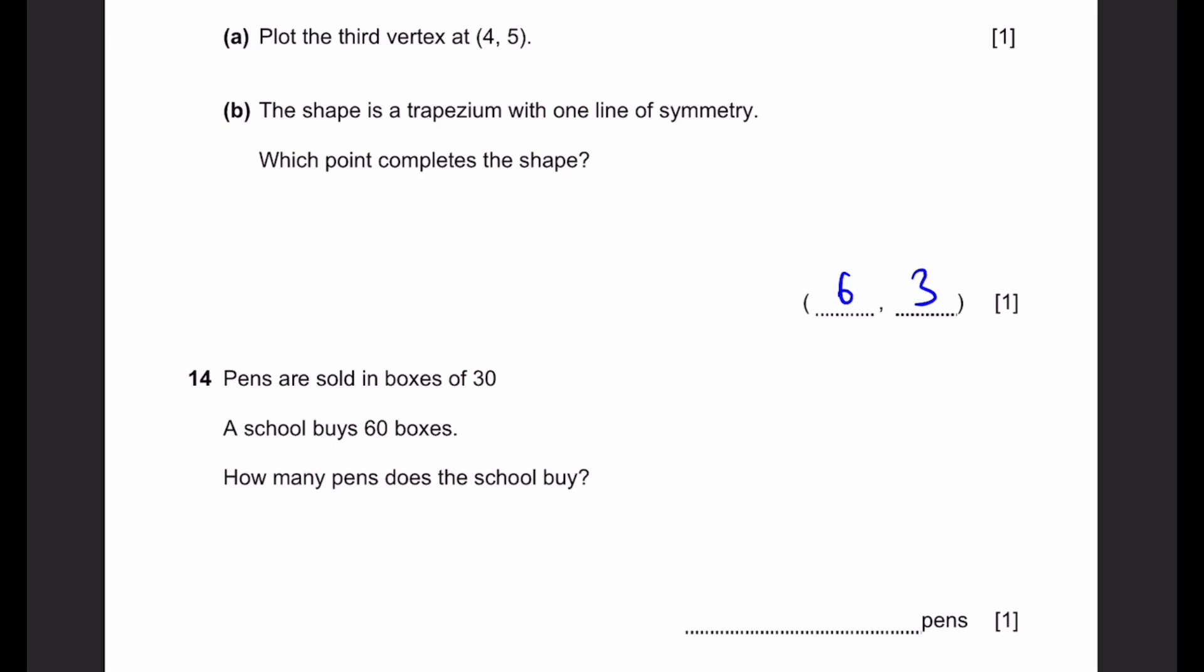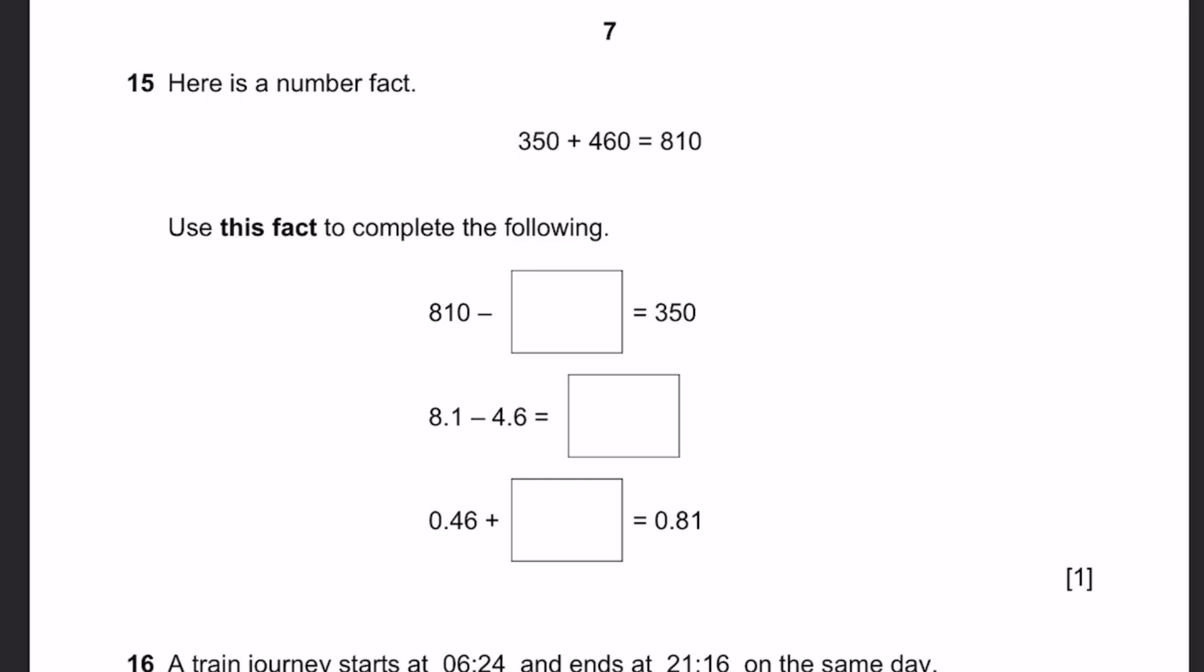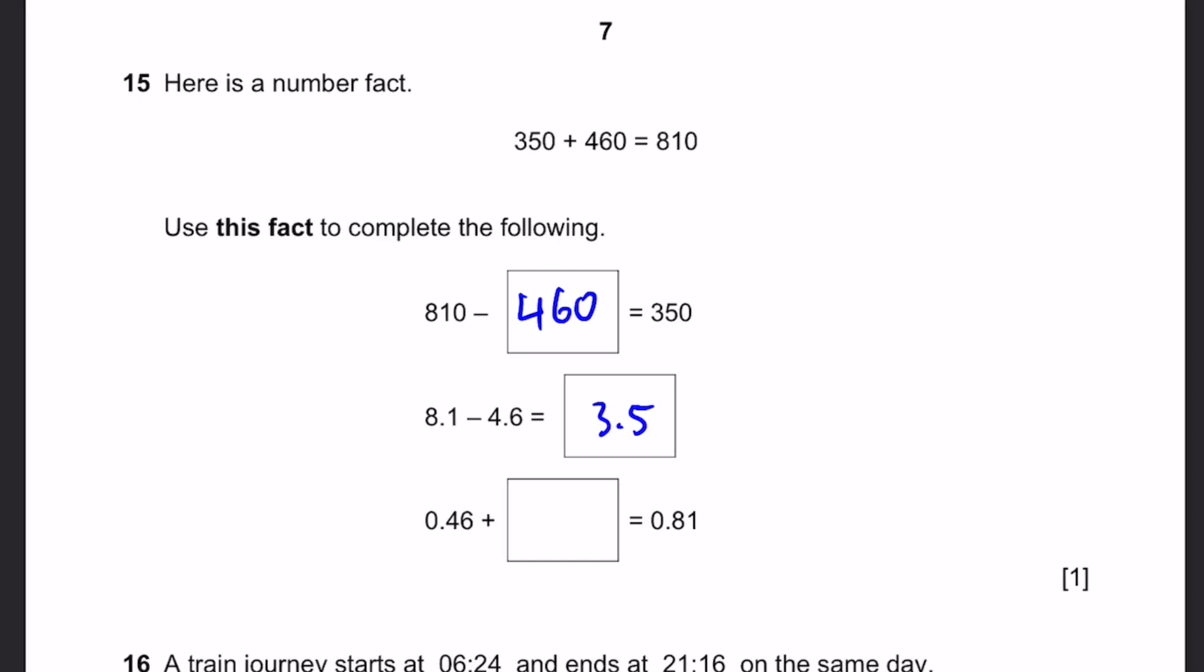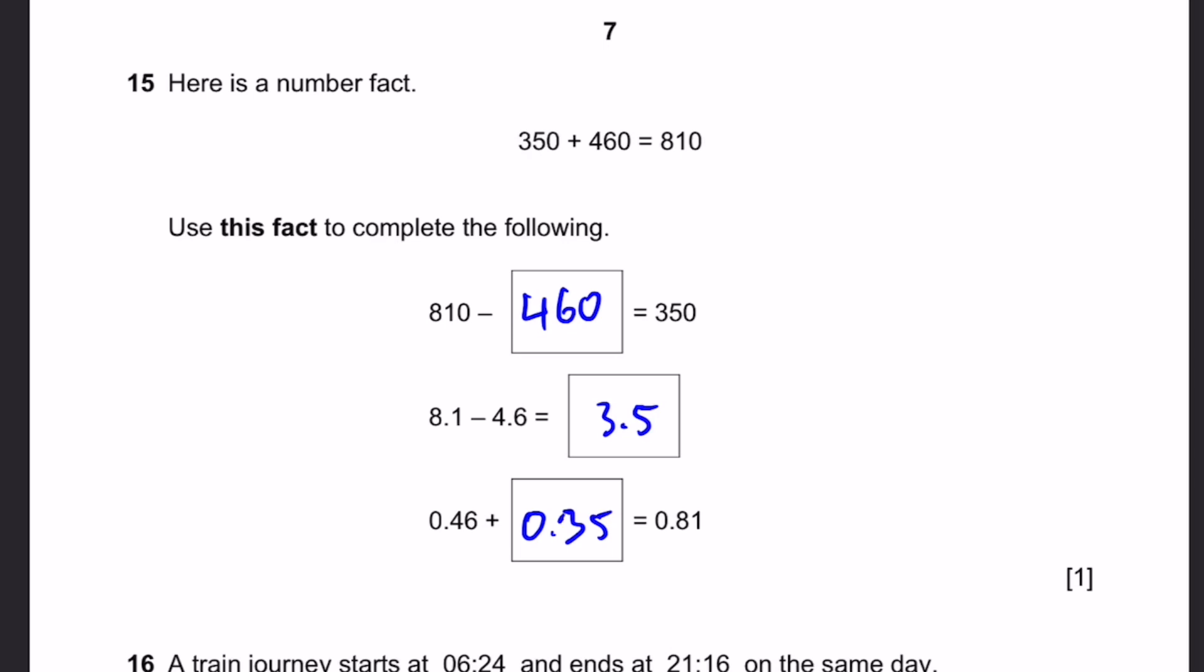Question 14. Pens are sold in boxes of 30. A school buys 60 boxes. How many pens does the school buy? That's simply 60 boxes into 30 pens per box, which equals 1,800 pens. Question 15. Here's a number fact: 350 plus 460 equals 810. Use this fact to complete the following. 810 minus dash equals 350. We bring 460 to the other side: 810 minus 460. So the number is 460. 8.1 minus 4.6 equals dash. We divide by 100 to get 3.5. 0.46 plus dash equals 0.81. That's simply 0.35 using the same reasoning.